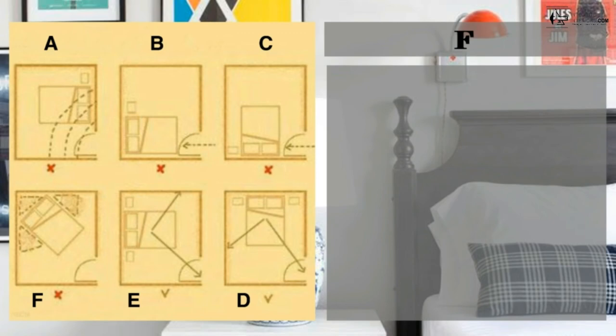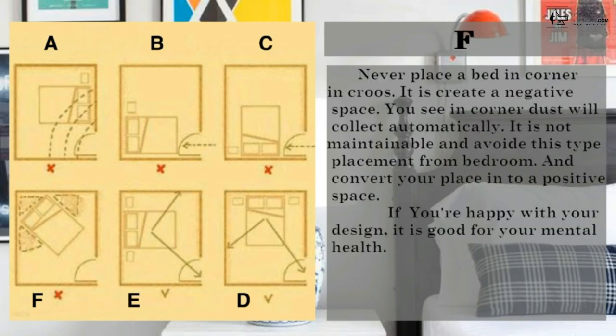And so what is option F? Never place a bed in a corner. It creates a negative space. You see in a corner dust will collect automatically. It is not maintainable, so avoid these types of placement from bedroom and convert your place into a positive space. If you're happy with your design, it is good for your mental health also.